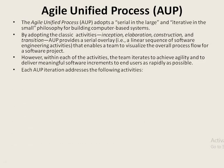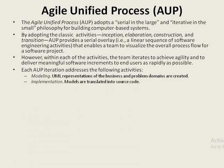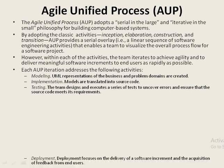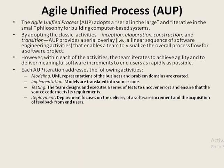Each AUP iteration addresses the following activities. First is modeling, where UML representations of the business and problem domains are created. Next is implementation, where models are translated into source code. Then comes testing, where the team designs and executes a series of tests to uncover errors and ensure source code meets its requirements. Deployment focuses on the delivery of a software increment and the acquisition of feedback from end users.